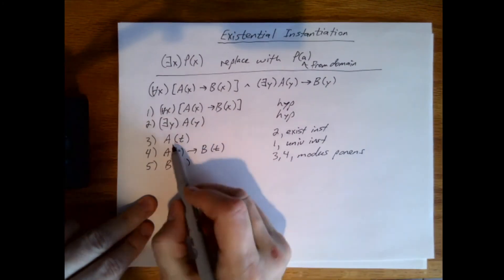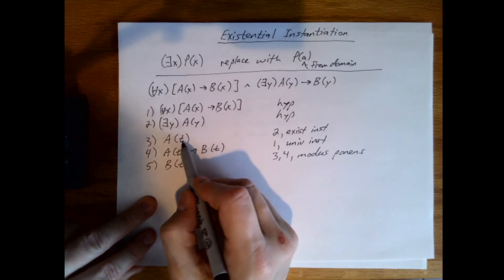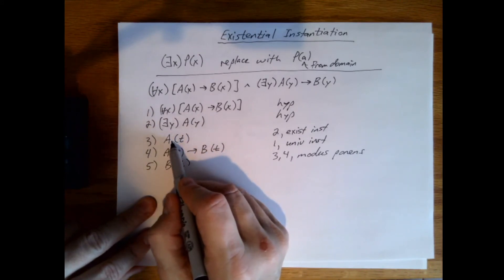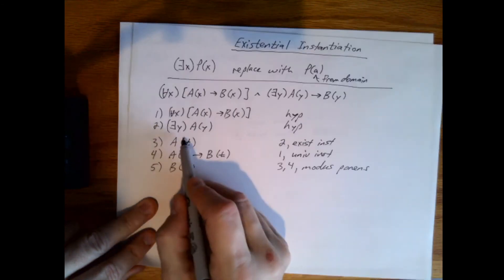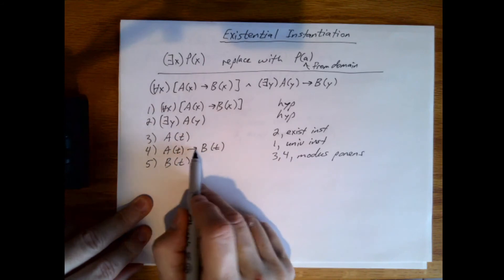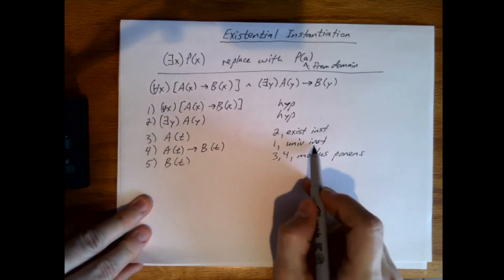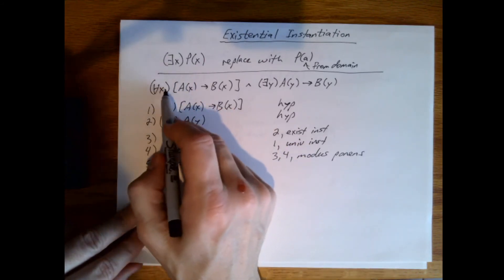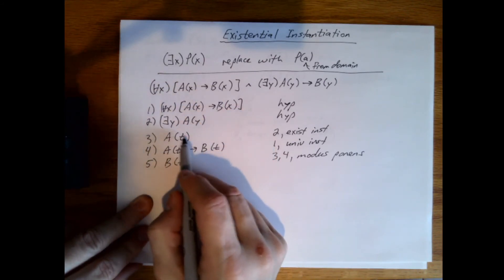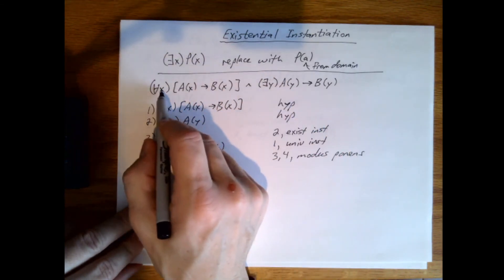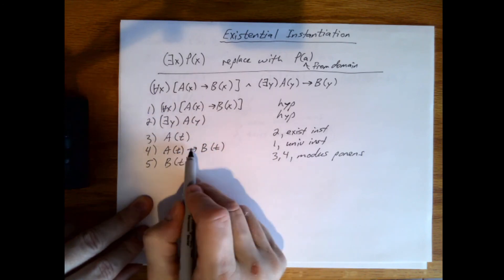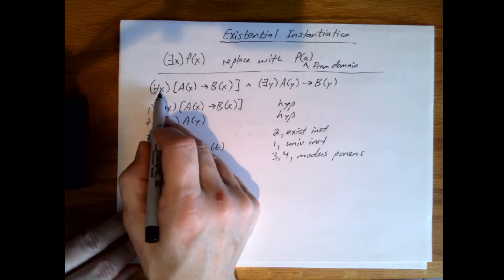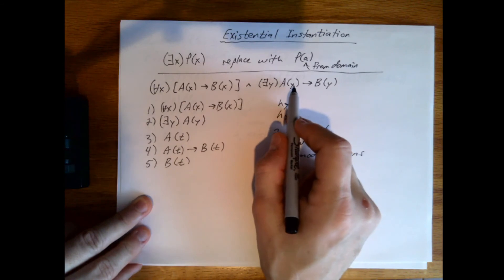When I was doing this here by doing T first, I chose a T from the domain that satisfied A, because there exists a Y such that A of Y is true. And now when I do universal instantiation, I'm still using that same number. And since we said for every X, A of X implies B of X, it doesn't matter which T I chose from the domain. If they're from the same domains, if the X's and the Y's are from the same domain, it doesn't matter, because this is always true. Because it's the universal. But this is not always true, or this right here.